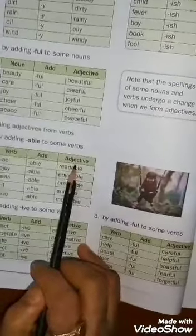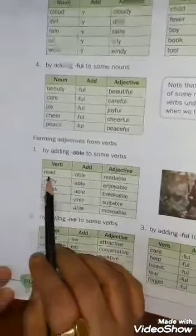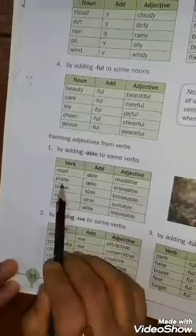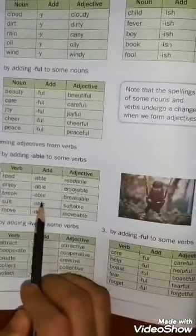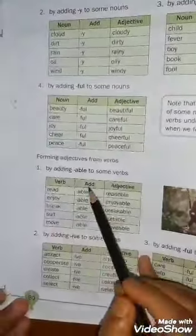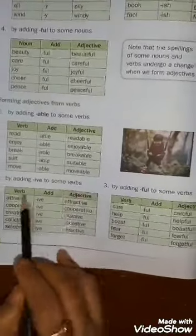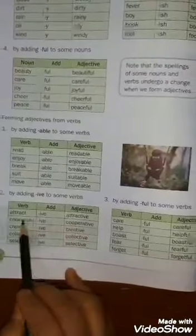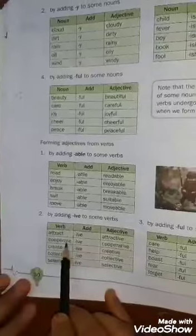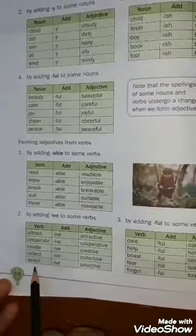From verbs: first, by adding -ABLE to some verbs. Examples: read + able = readable; enjoy + able = enjoyable; break + able = breakable; suit + able = suitable; move + able = movable. Second, by adding -IVE to some verbs: attract + ive = attractive; cooperate + ive = cooperative; create + ive = creative; collect + ive = collective; select + ive = selective.